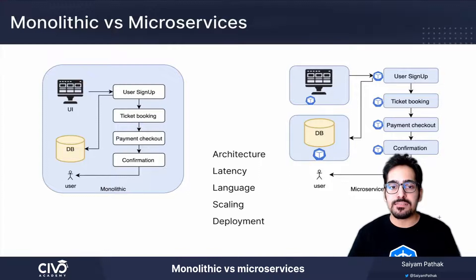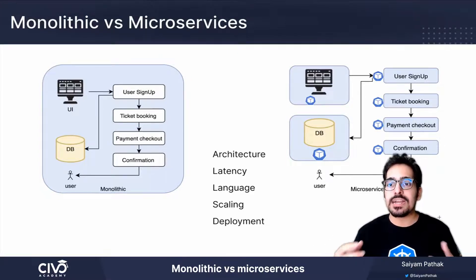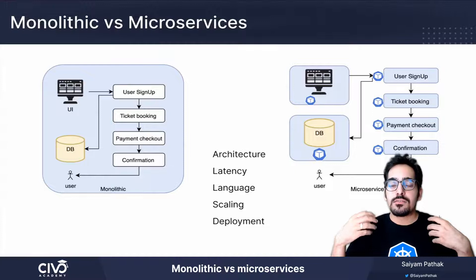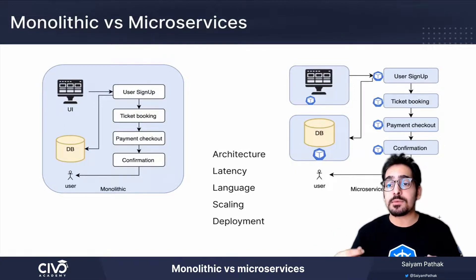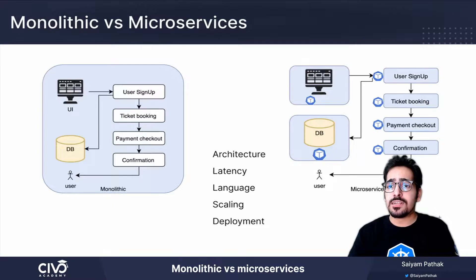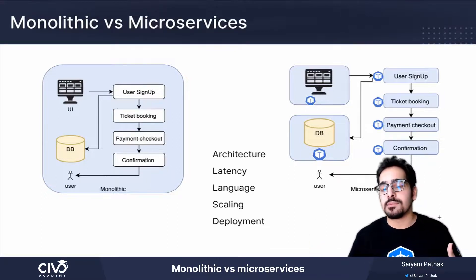Coming to the deployment piece, monolithic applications take more time to deploy and it's not a fail-fast model. Whereas in microservices, you can deploy individual components — even on a daily basis or hourly basis when you have a very small change — and you can deploy those changes on individual components on a live production environment. Yes, there are companies that are doing that. Whereas in monolithic, even a small change requires you to deploy the entire stack again, making deployment harder than in microservices architecture.